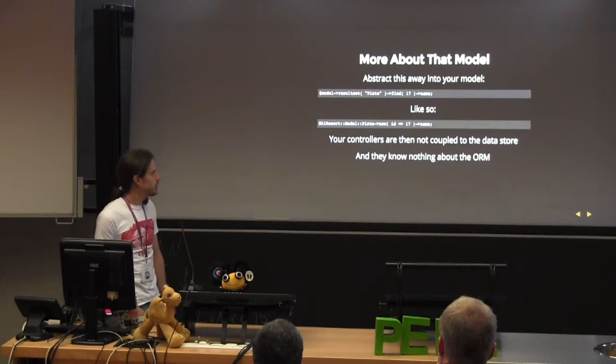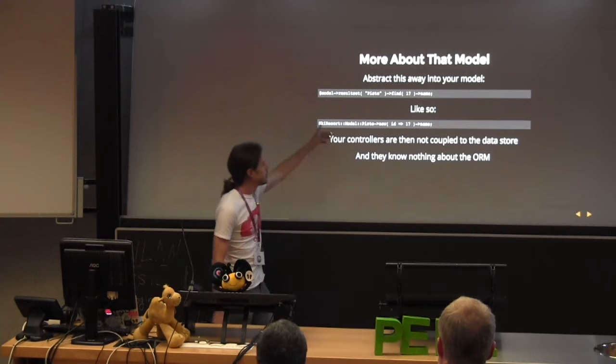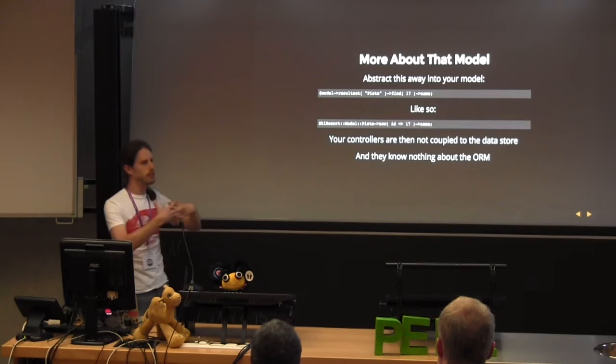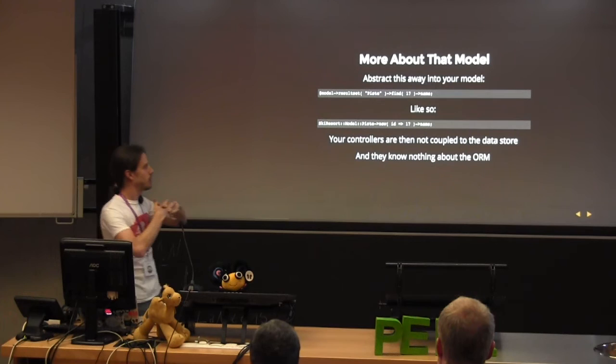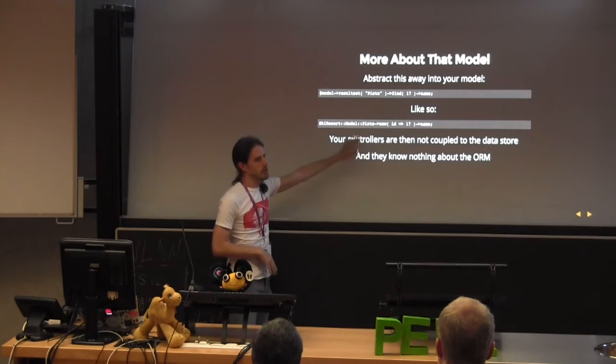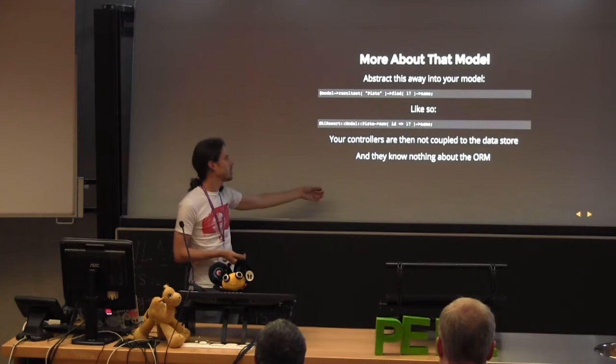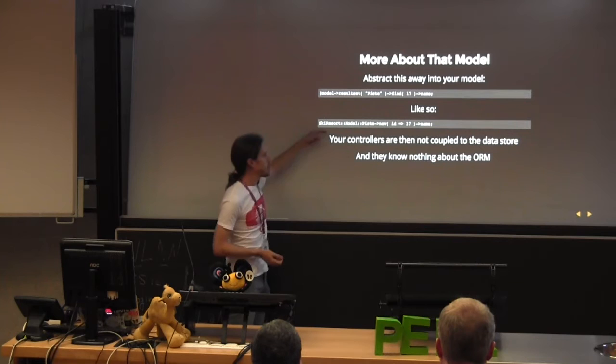The key here is this DBIx::Class syntax — you have to abstract that away into your model classes. You don't call that from the controller because you're coupling yourself to the ORM and the rest of the stack. Instead of calling this from your controller, you would call your model class. I'm using the example of a Ski Resort because I thought that was appropriate. Just constructing an object — this is important so we have that separation of concerns.